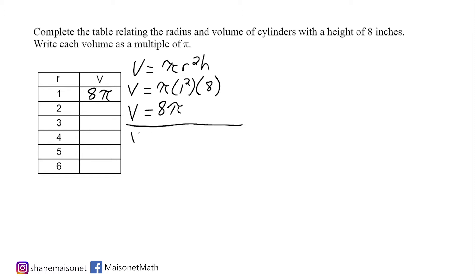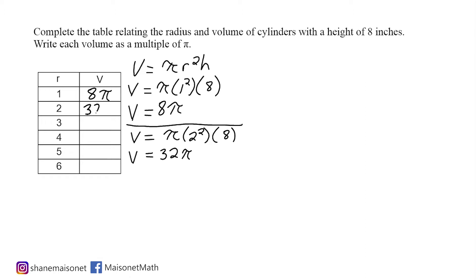For the next cylinder, we have a radius of 2, so we are going to square the radius and then multiply that by a height of 8. If we square 2, that gives us 4, and 4 times 8 is 32, so we would get a volume of 32 pi, which is our output when the input is 2.